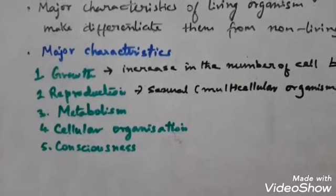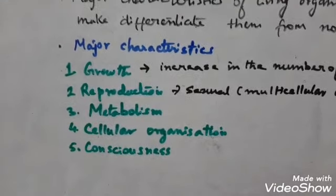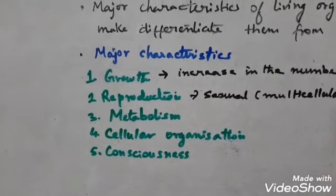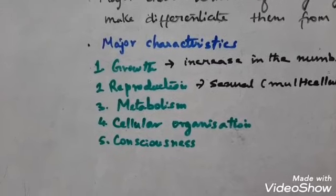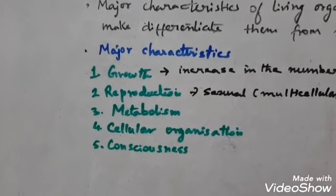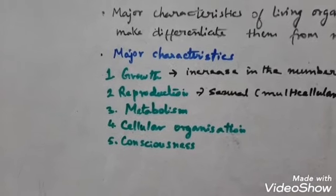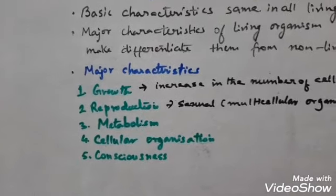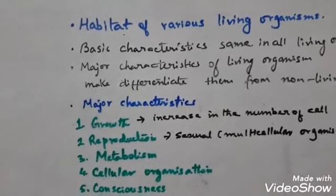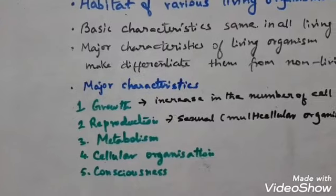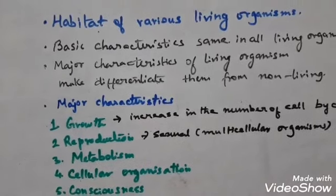Apart from these five important major characteristics, there are a few more, such as size, shape, life cycle, movement, self-regulation, variation, adaptation, healing and repair, excretion, and death. All these also contribute to the basic characteristics, but these five are the primary ones we discuss here.